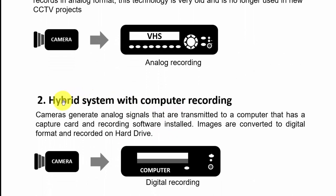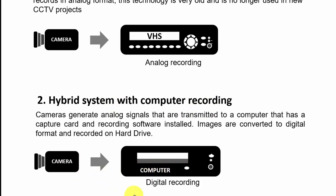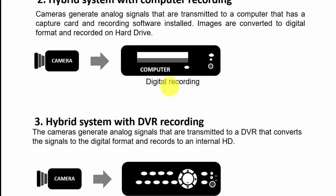Then there's a hybrid system with a computer. The camera is still an analog camera but it connects to a computer, and the computer can convert from analog to digital so you can record in digital format.